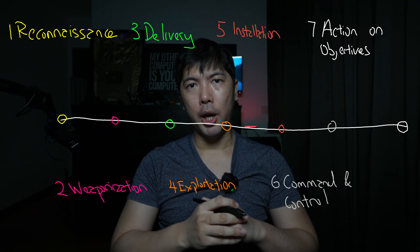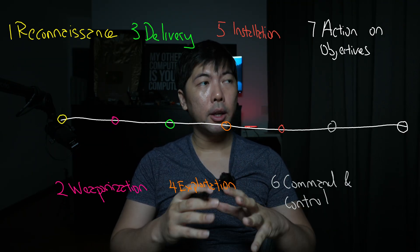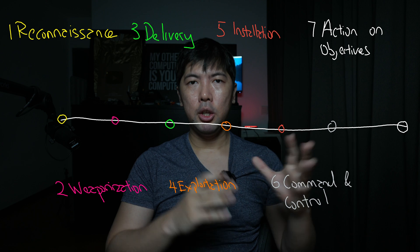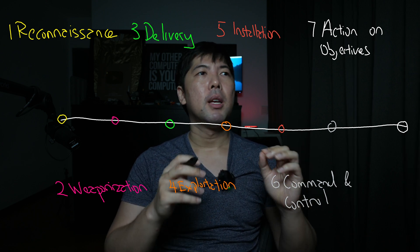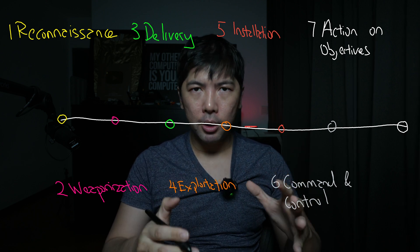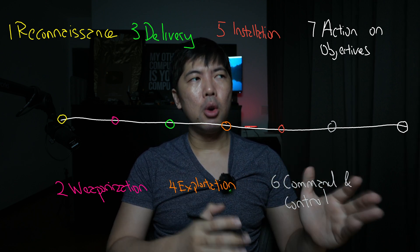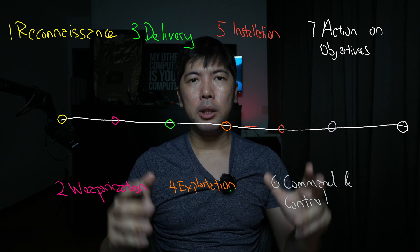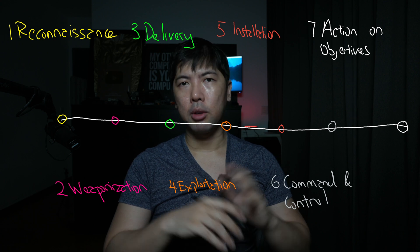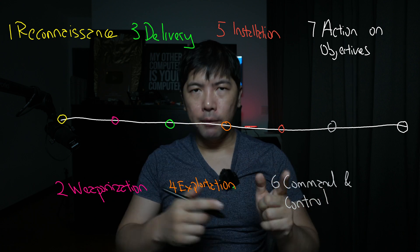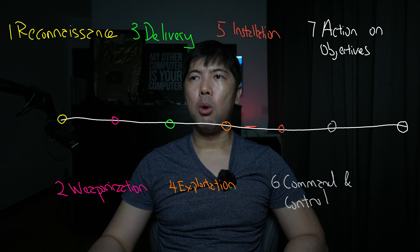There are seven phases when it comes to the Cyber Kill Chain, and we'll be walking through each of these seven so that you can learn exactly what it takes to go through a complete ethical hacking exercise or campaign.